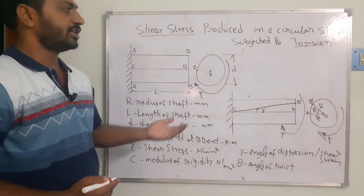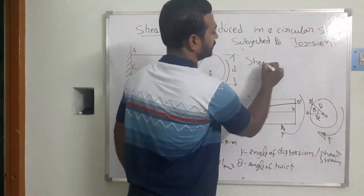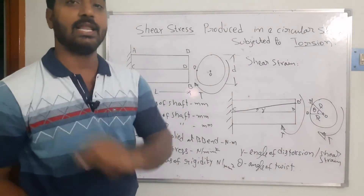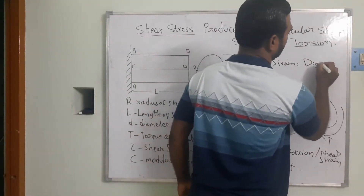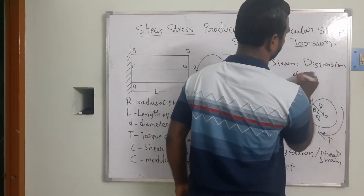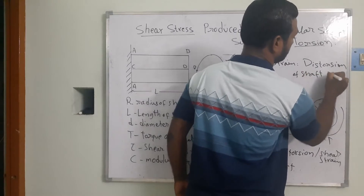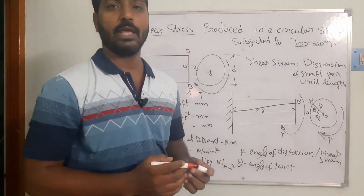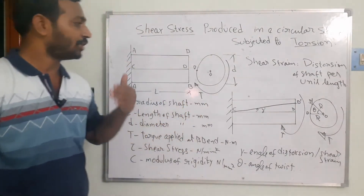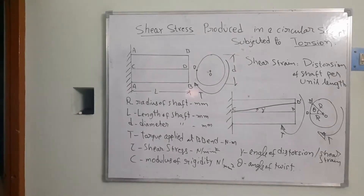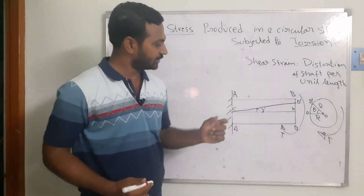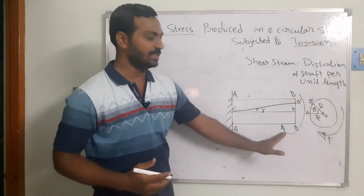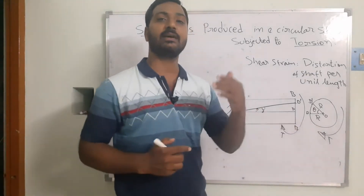Now we consider the shear strain in this material. The shear strain formula is: shear strain equals distortion of the shaft per unit length. Using this, we can calculate the shear strain, shear stress, and the magnitude of the torque.